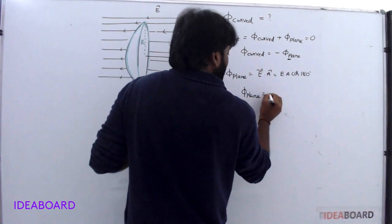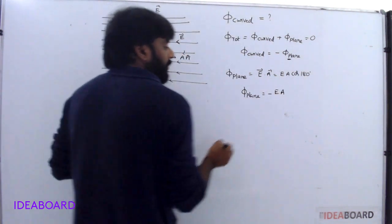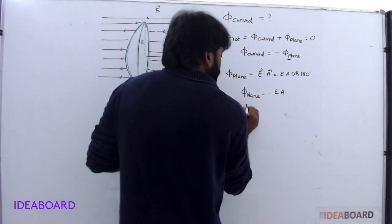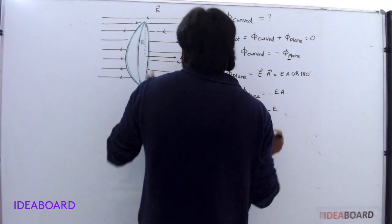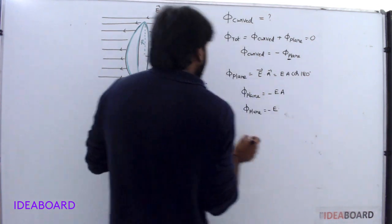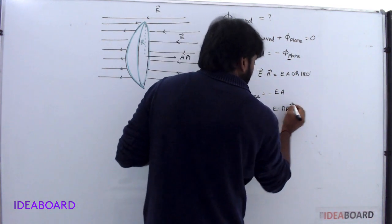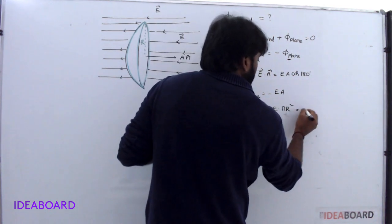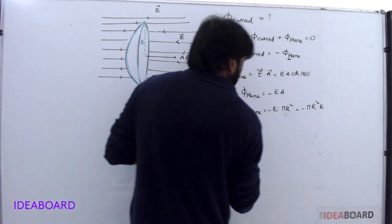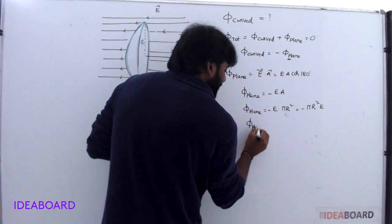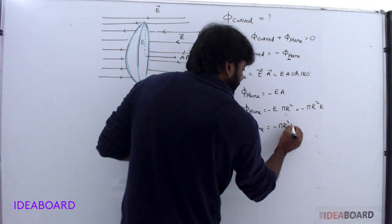Flux through plane is equal to minus E A. The area of the plane surface is pi r square, so flux through plane is equal to minus pi r square into E.